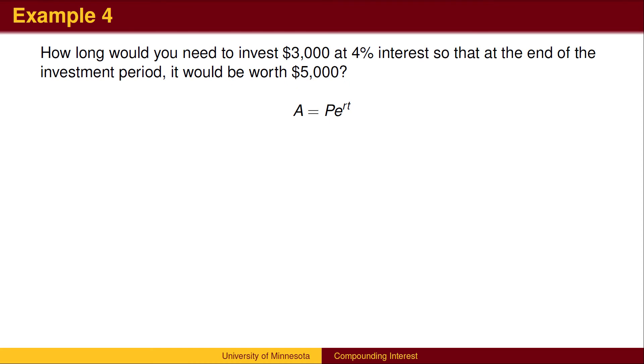Here's a final example. How long would you need to invest $3,000 at 4% interest so that at the end of the investment period, it would be worth $5,000? Plug in the values for A, P, and R.